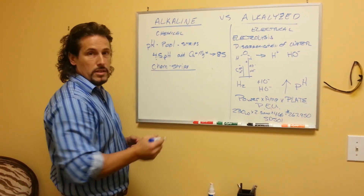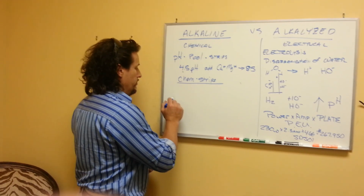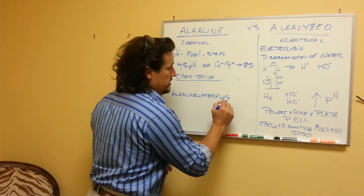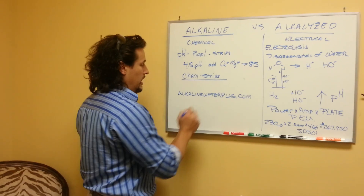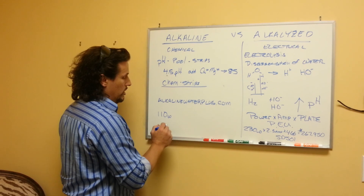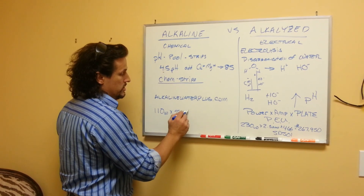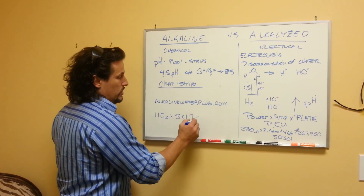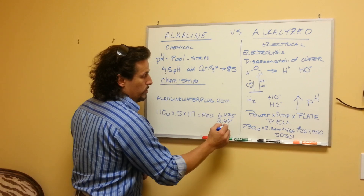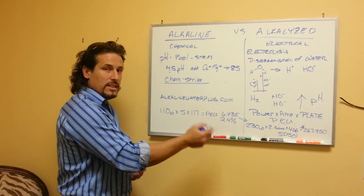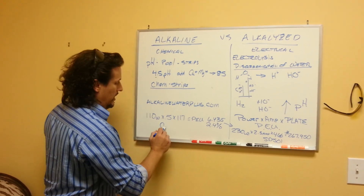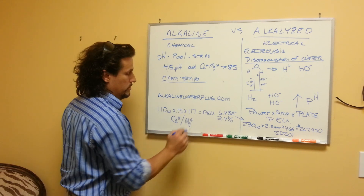I recommend if you want to compare these other units, Alkaline Water Plus has a great website — it's actually a competitor's website — and it proves the power output. Most of the units there have 110 watts times a half amp, and the standard plate size is 117 square inches, which gives you a PEU of 6,435 — roughly 2.4% of this power.